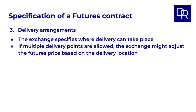Delivery arrangements are also critical. The exchange specifies where delivery can take place, which is very important for physical commodities due to transportation. For a futures contract on natural gas, for example, delivery might be specified at major pipeline hubs. If multiple delivery points are allowed, the exchange might adjust the futures price based on the delivery location, reflecting any transportation cost differences.